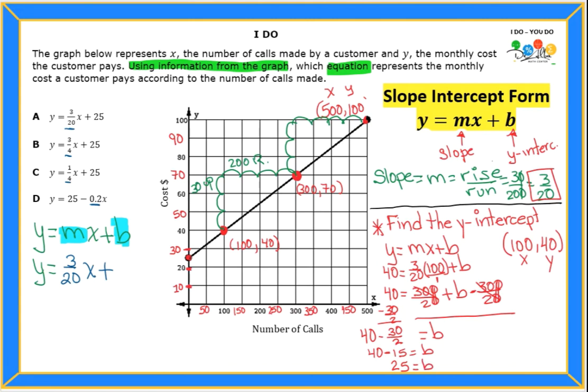Now I found my y-intercept, and I actually have my slope already. Those are the two that I need to replace on my equation, which already has 3 over 20. So all I need to replace now is 25. I'm going to say plus 25. Now that's my answer. Let's look at the answer choices and see if you can find the one that's my answer. Yep, the answer should be letter A for this one. It's exactly my equation.